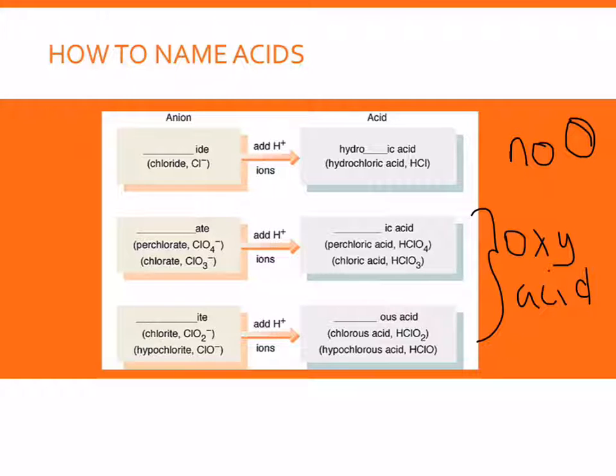So if we have the -ate ion, we get the -ic acid. So chlorate becomes chloric acid. If we have the per-ate ion, it becomes per-ic acid. So perchlorate would become perchloric acid. And again you know that they're acids because they've been mixed with hydrogen.